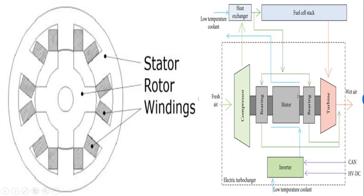To summarize the operation: at low load, the motor assists in rotating the shaft. As the shaft rotates, air is compressed and supplied for efficient combustion. Slowly the engine RPM picks up, sufficient exhaust gas becomes available, and at that point the motor gets de-energized.